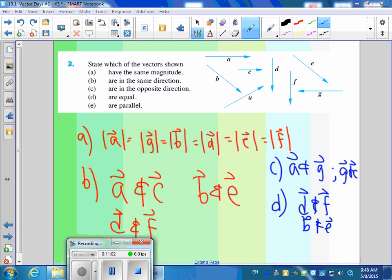Our parallel, parallel, that's easy. A, C, G. Looks like B and E are parallel. D and F are parallel. You can get the parallel ones. So there's equal vectors for you.